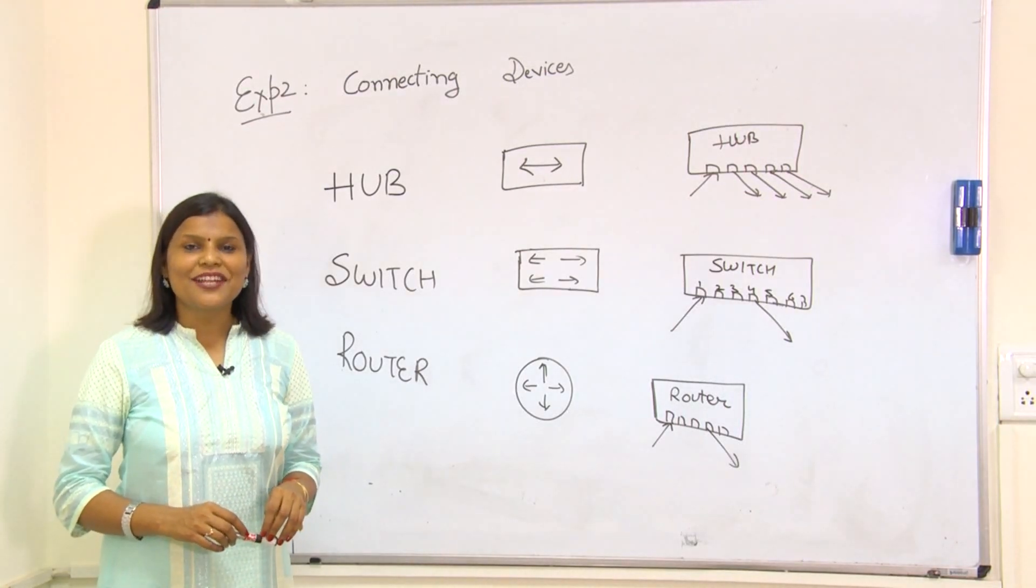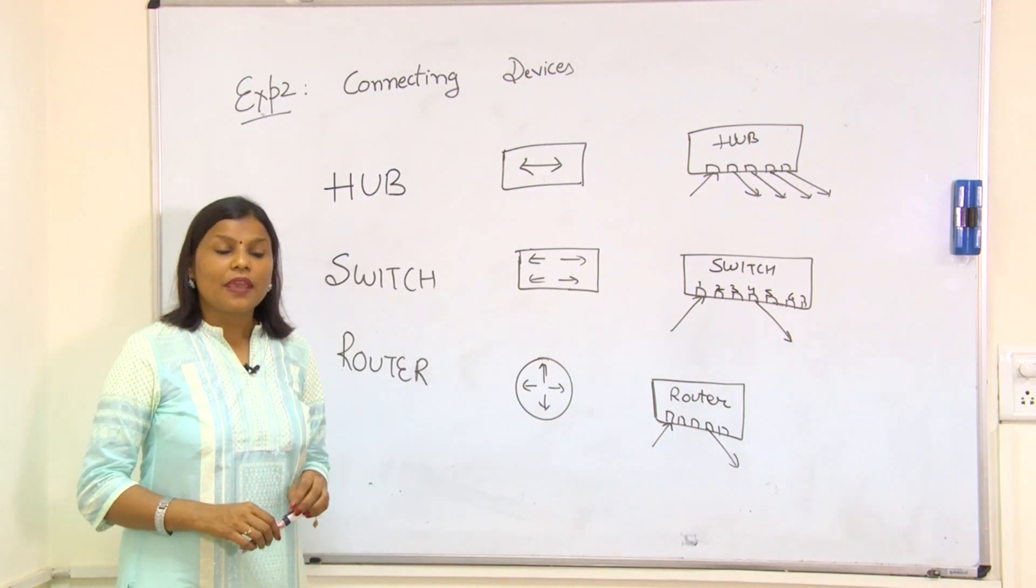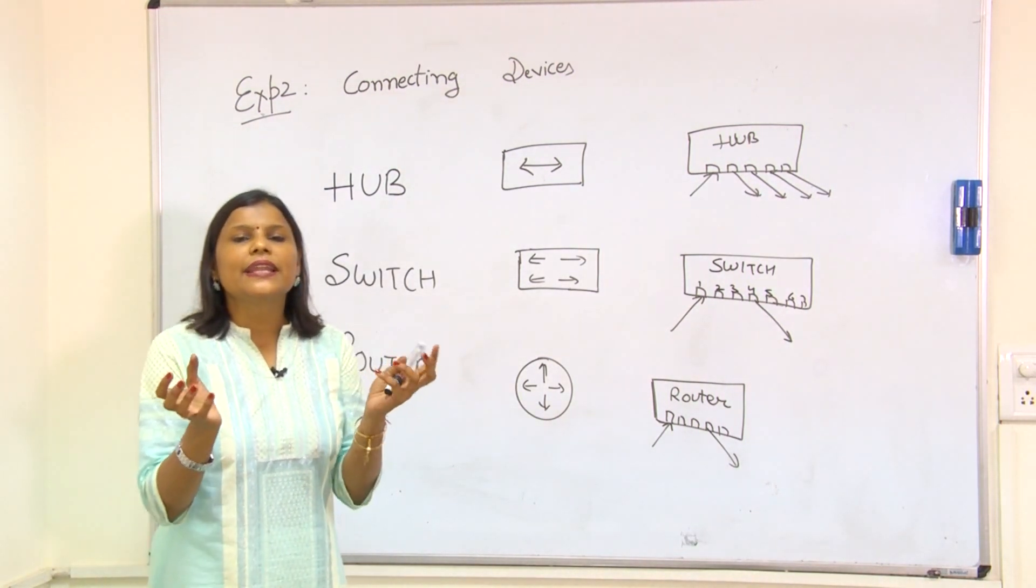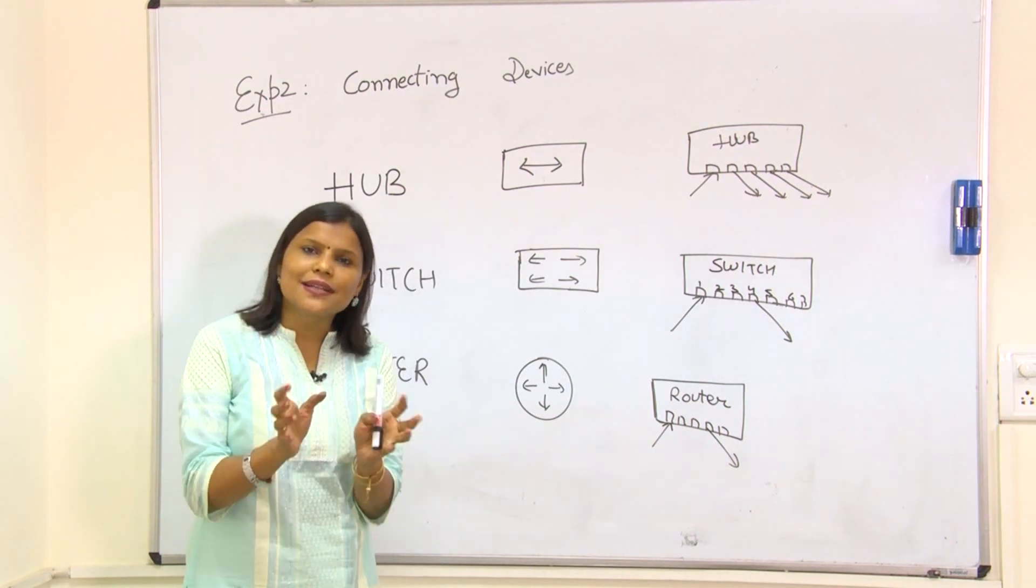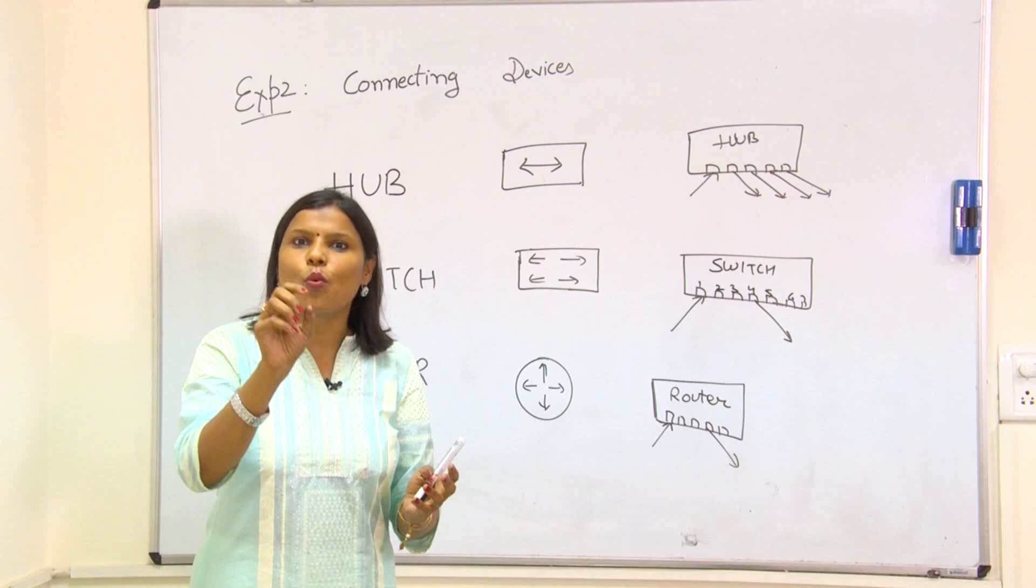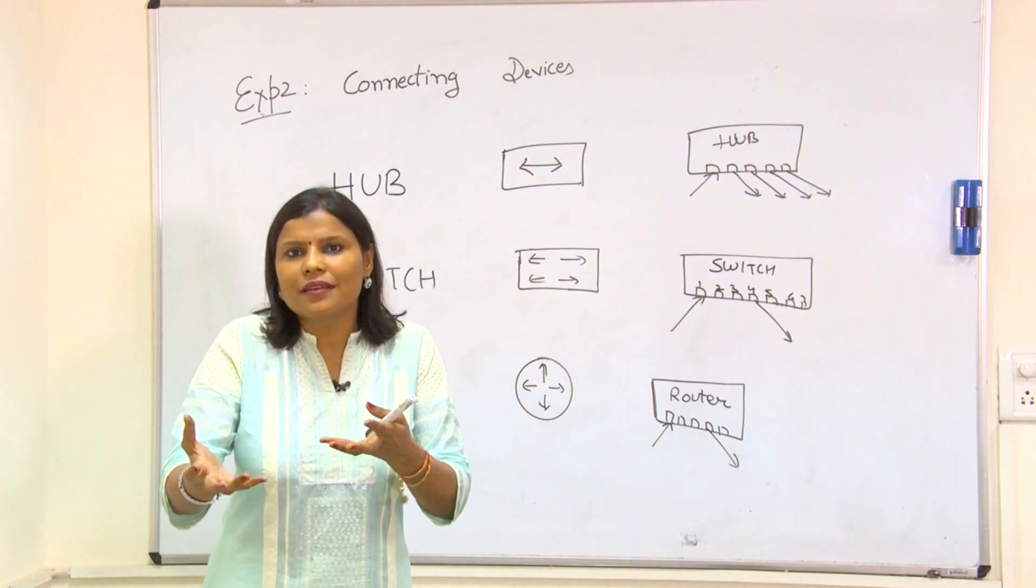Let's start with the second experiment: connecting devices. In our first experiment, we connected two computers, but we cannot connect the whole world through wired medium. We need devices like hubs, switches, and routers.